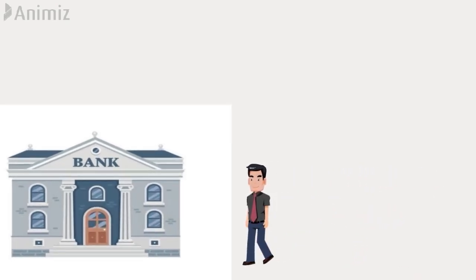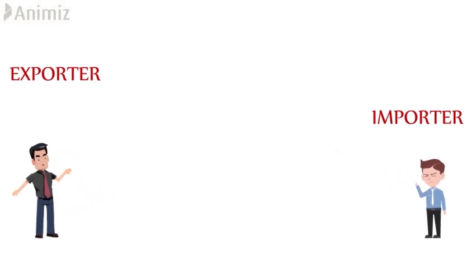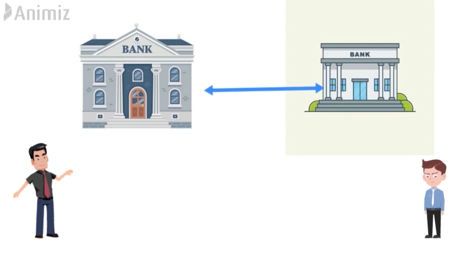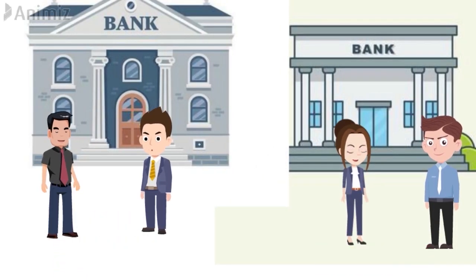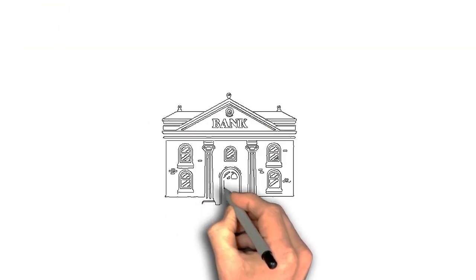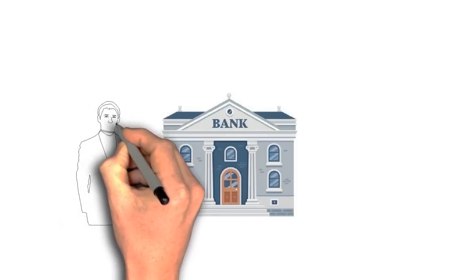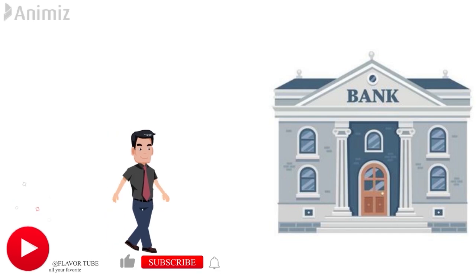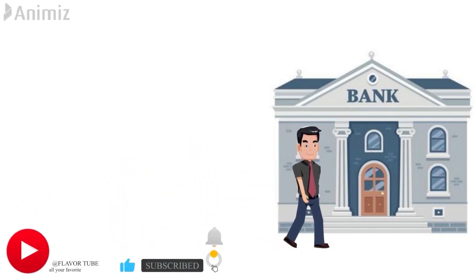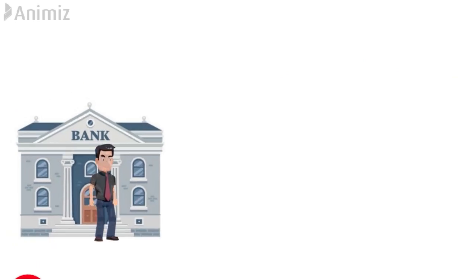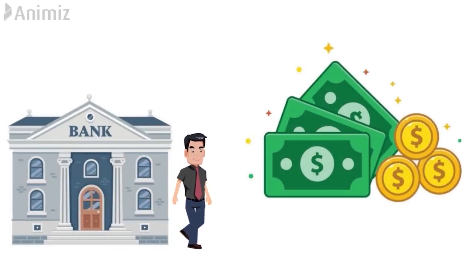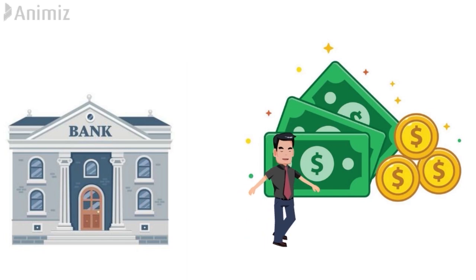When you are dealing with the exporter bank, you will be able to use a document which will be used in the transaction. The exporter will communicate with you through this document — that is the promise of the exporter. The exporter will work through the bank, and the importer bank will be connected to the exporter bank.